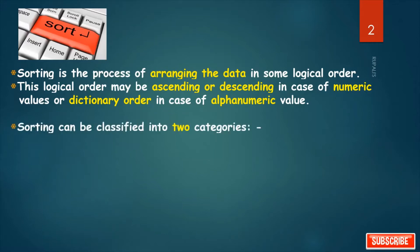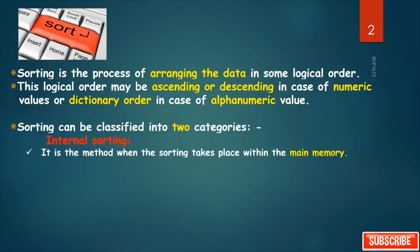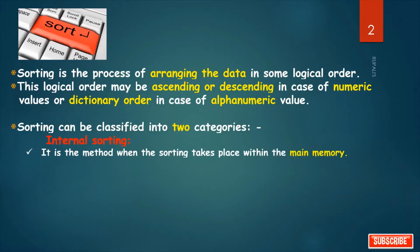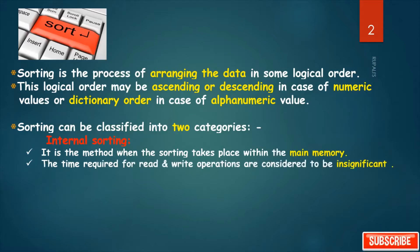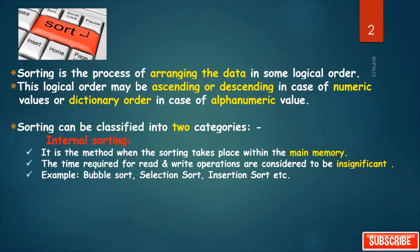Sorting can be classified into two major categories. The first one is internal sorting. In case of internal sorting, it is the method when the sorting takes place within the main memory. The time required for read and write operations is considered to be insignificant here. Examples include bubble sort, selection sort, insertion sort, etc. We will learn each and every sort in detail later.